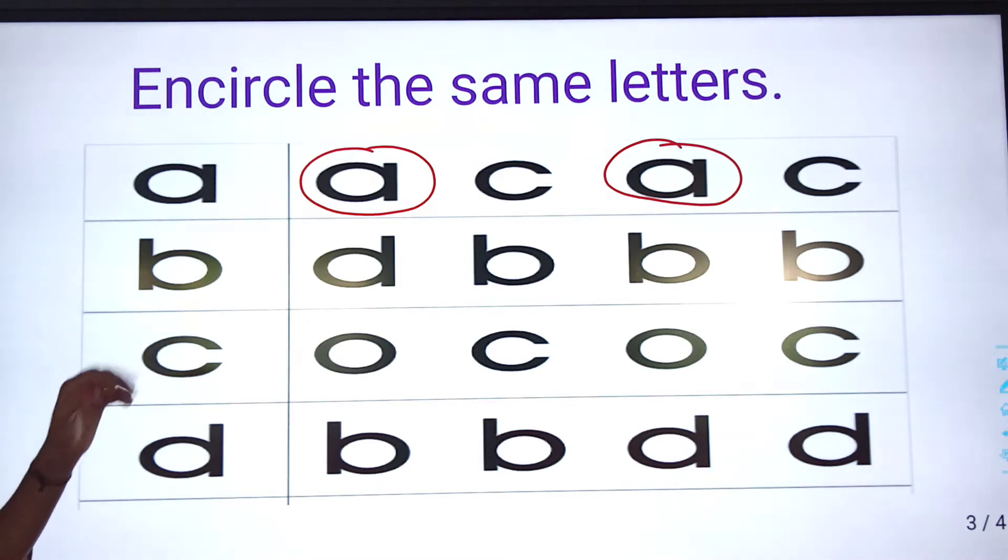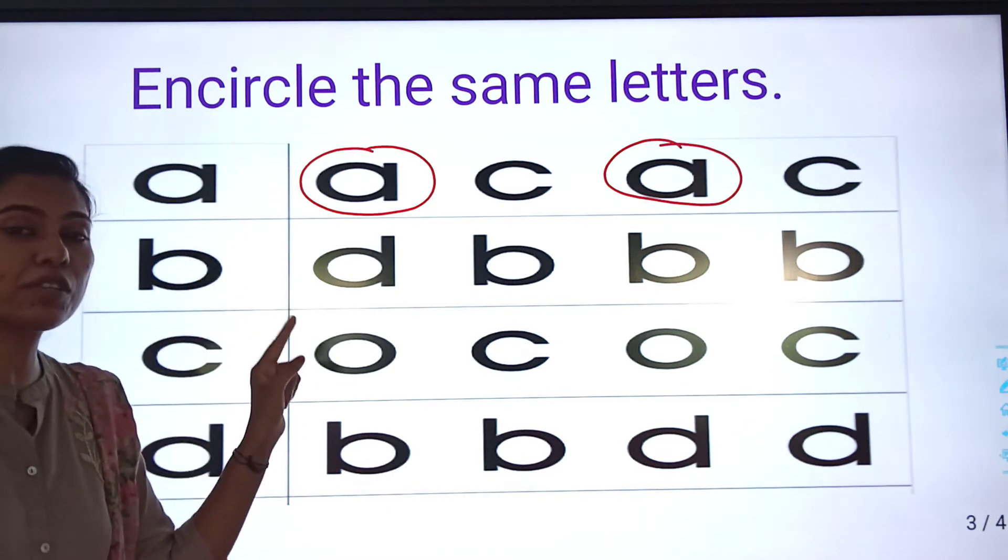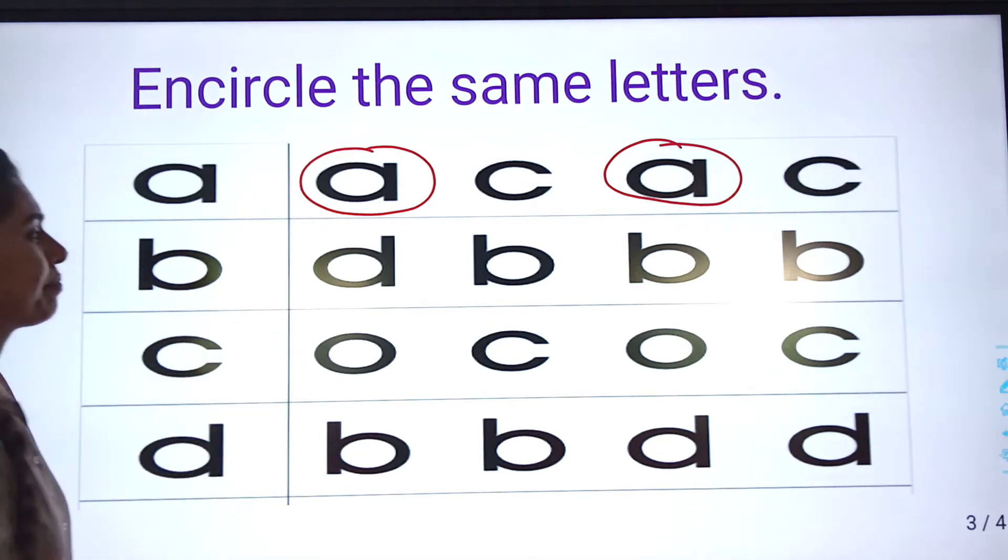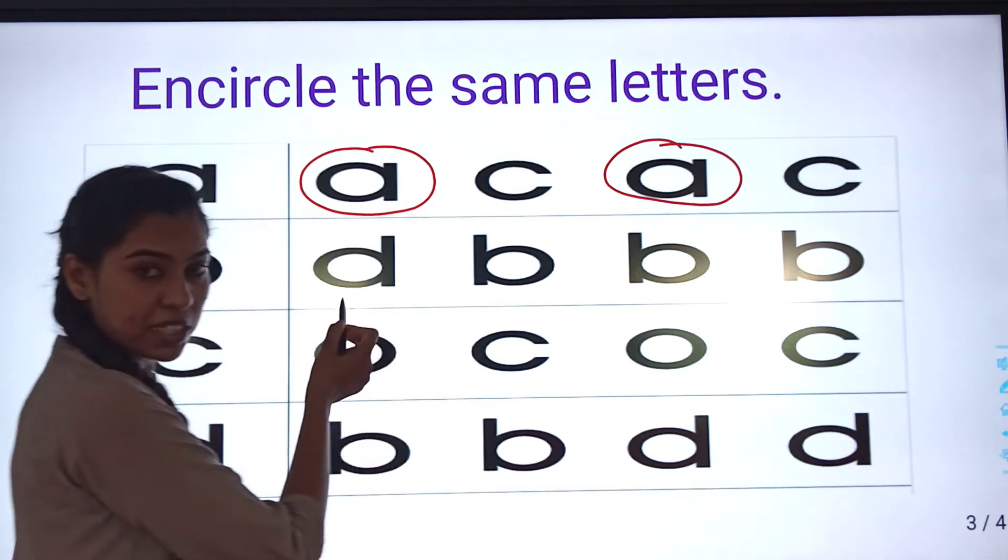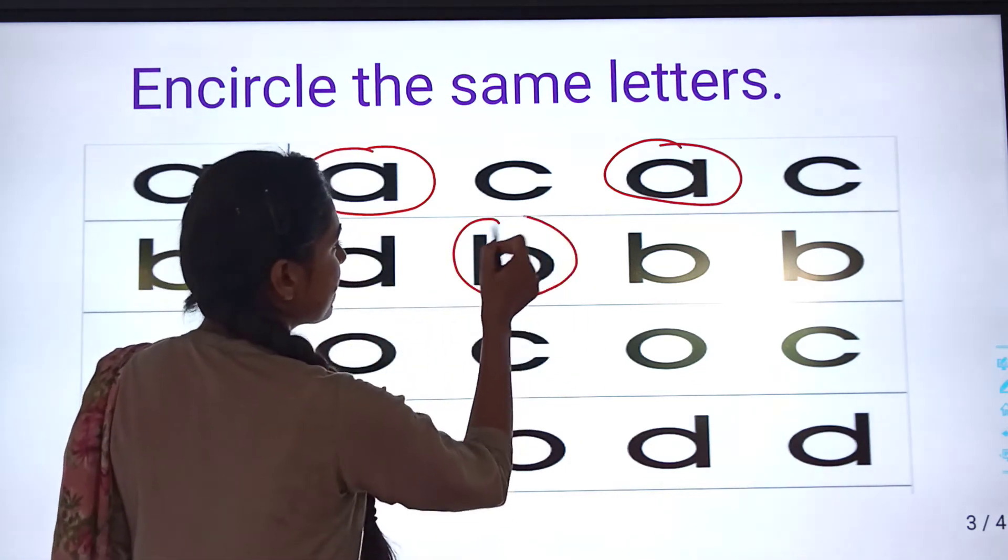Come to the next letter. That is, small letter b. To, hummei kismei circle karna hai? Hummei ismei find karna hai. Jitne bhi b letters hoongi, usmei hap circle karay ga. B hai? This one is b? No, this is d. Hum, b mein circle karay ga.